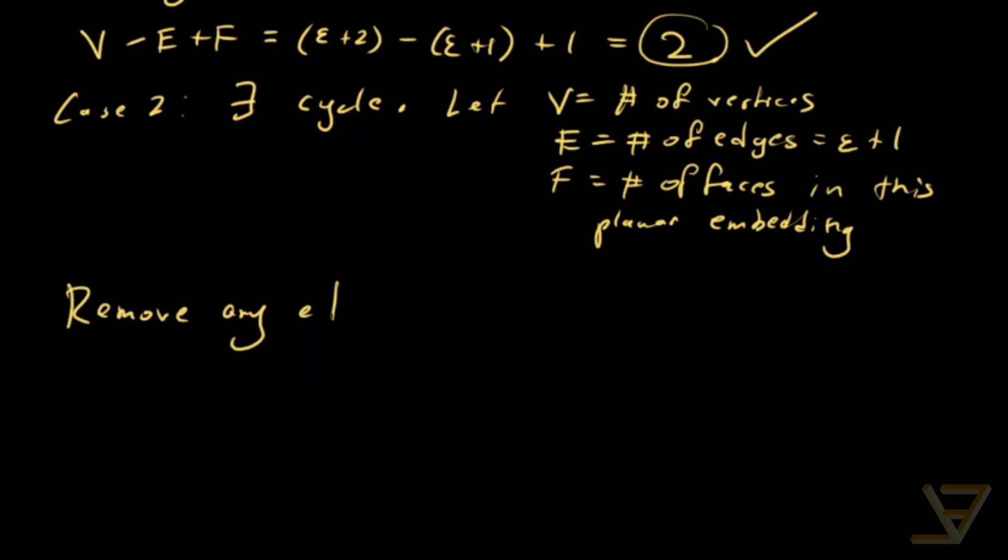Now what we're going to do is that we're going to remove an edge from the cycle. Remove any edge from the cycle. Because, remember, we're assuming that there exists a cycle. I'm not going to prove this, but there's something that holds true.